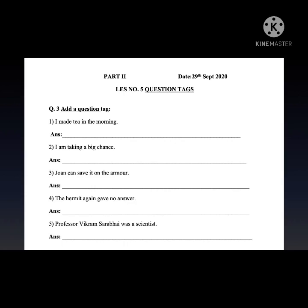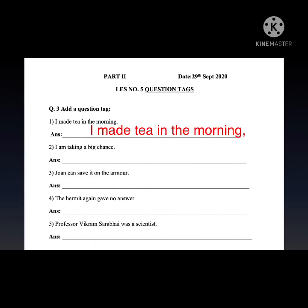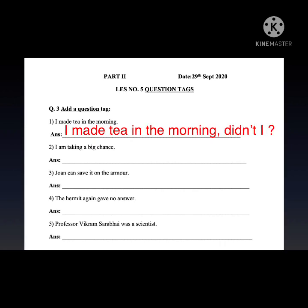Number one: 'I made tea in the morning.' The answer will be: 'I made tea in the morning, didn't I?' Why 'didn't I'? Because there is no auxiliary verb, so we take 'did' as the auxiliary verb, and as the sentence is positive, we make it negative. Let's move to the second one: 'I am taking a big chance.'